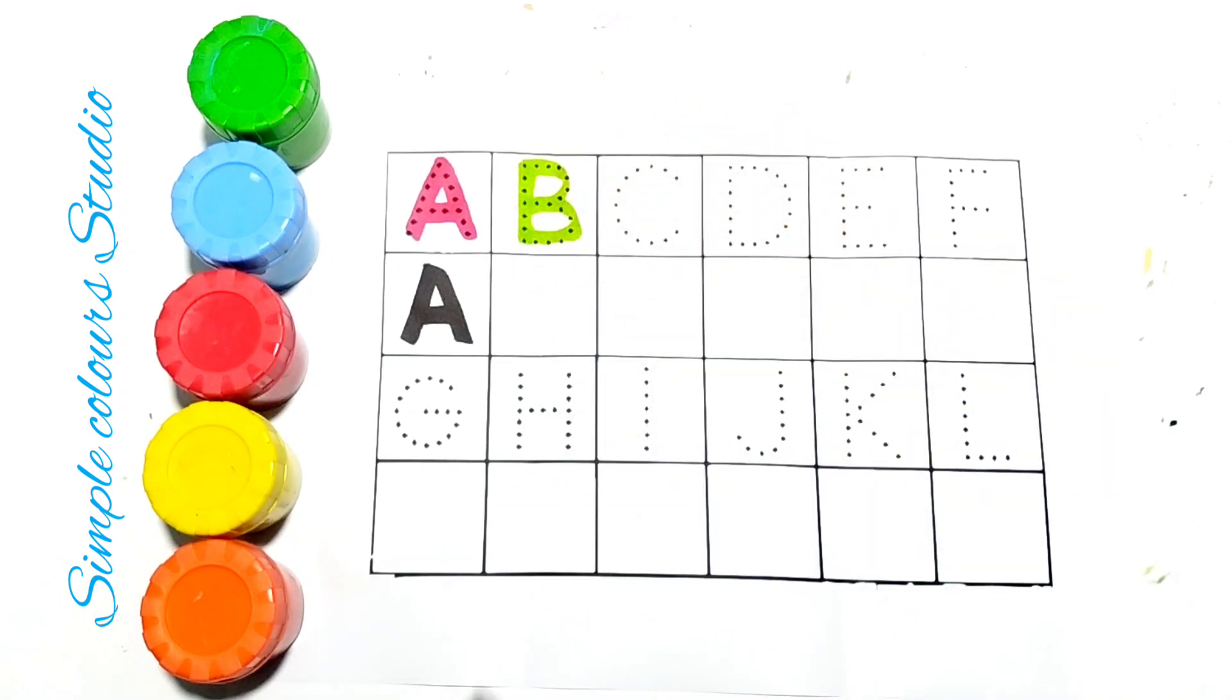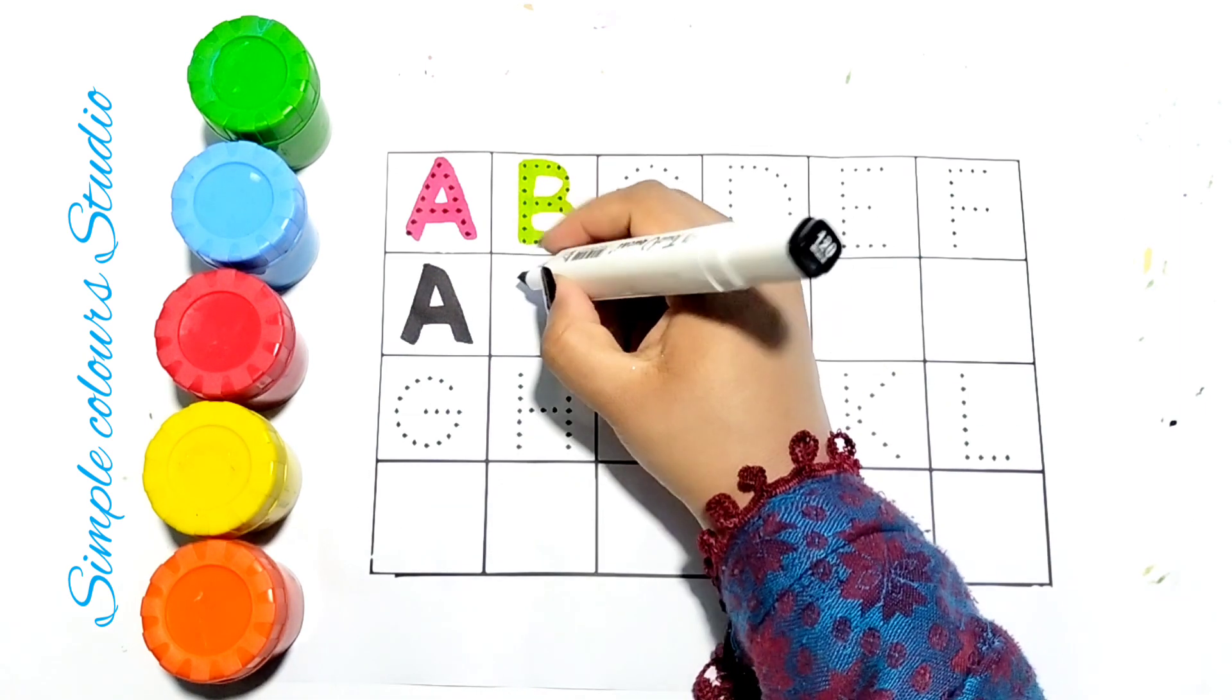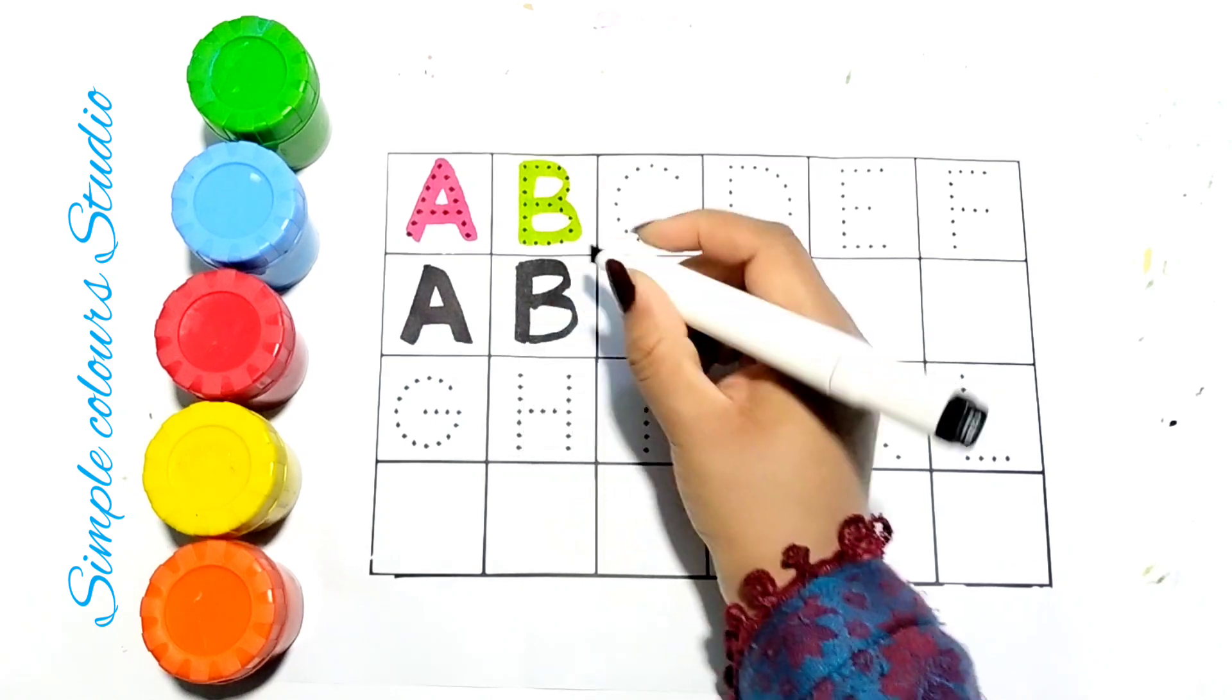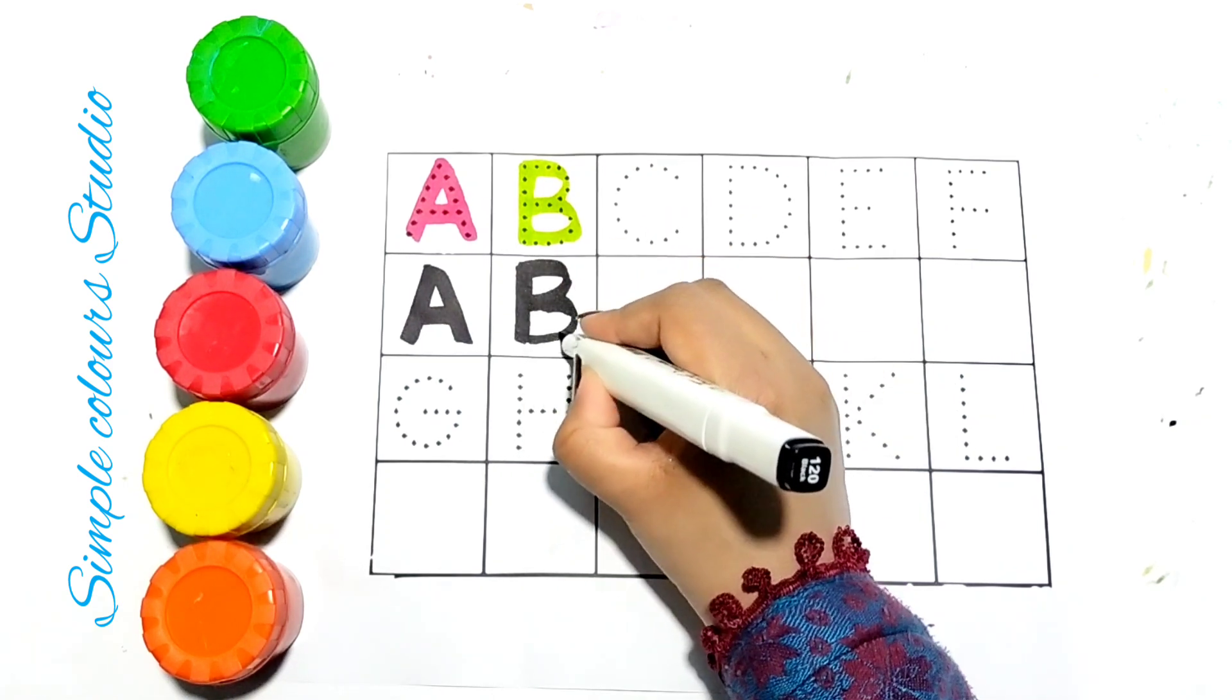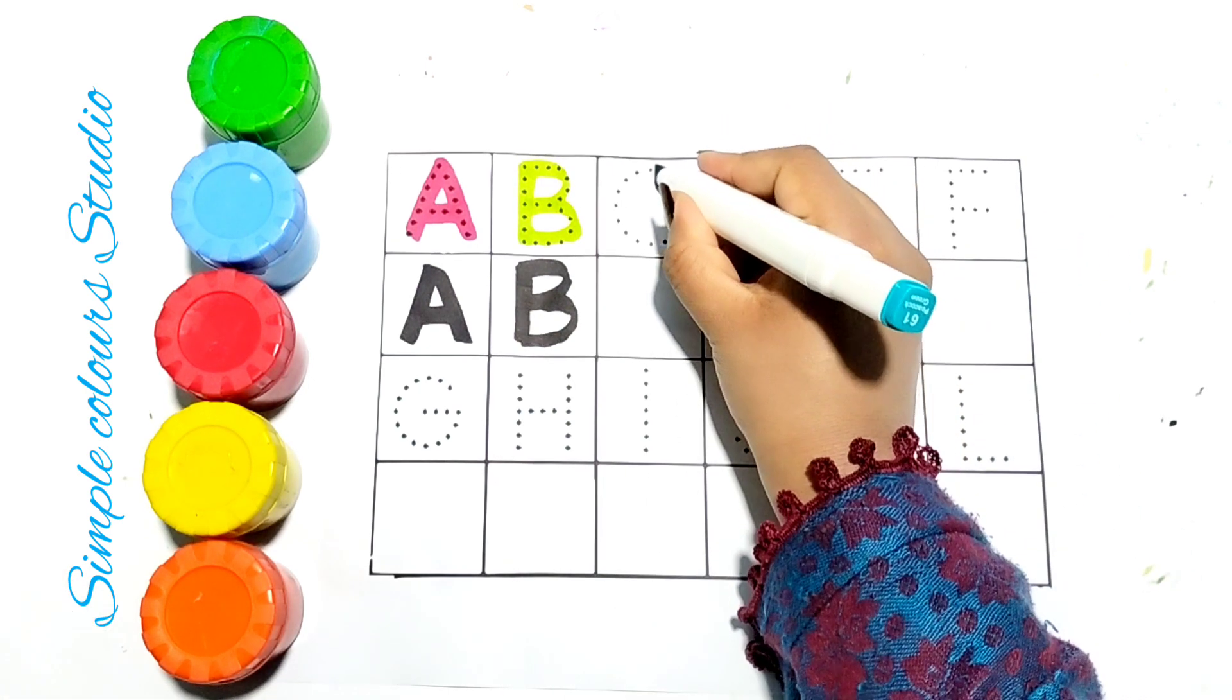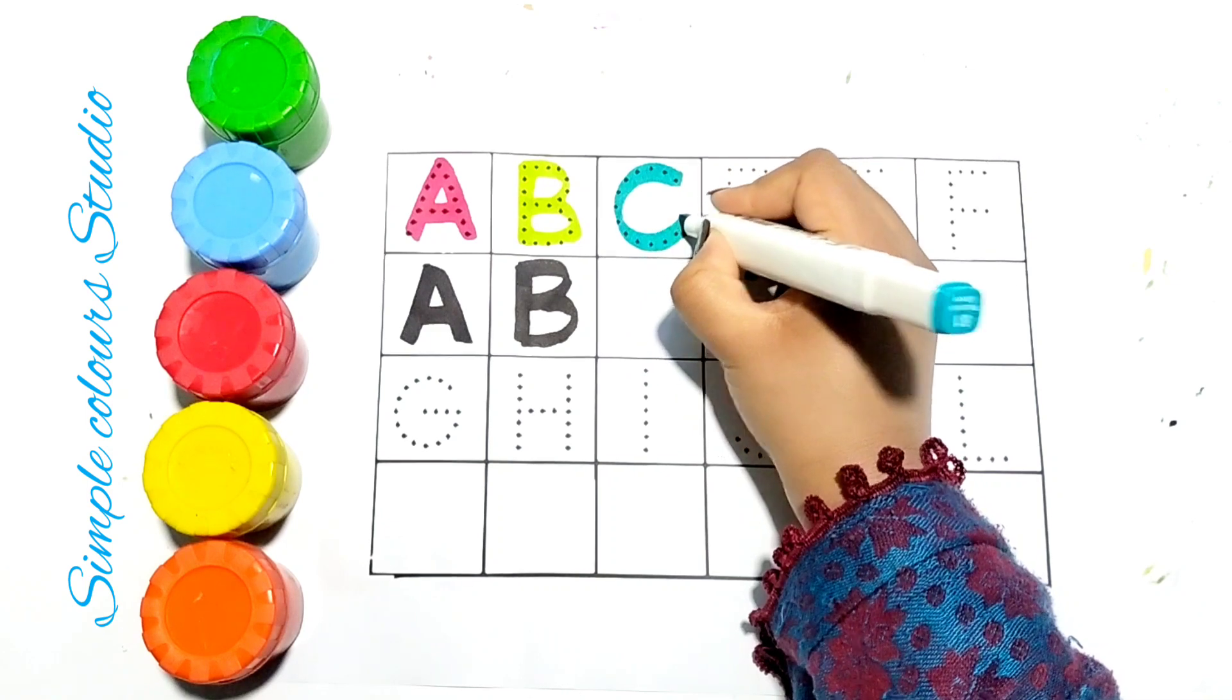A B C D E F G H I J K L M N O P. B is for book. T U V W X Y and Z. Now I know my ABCs. Next time won't you sing with me?